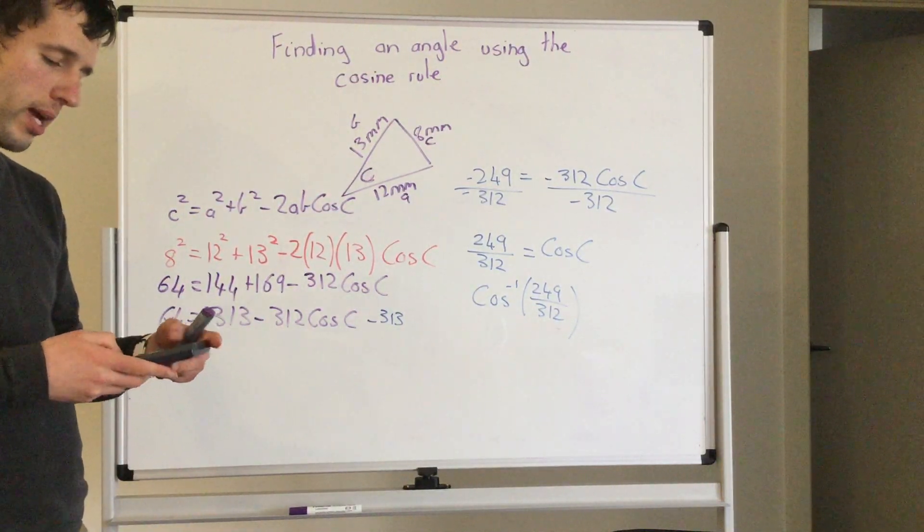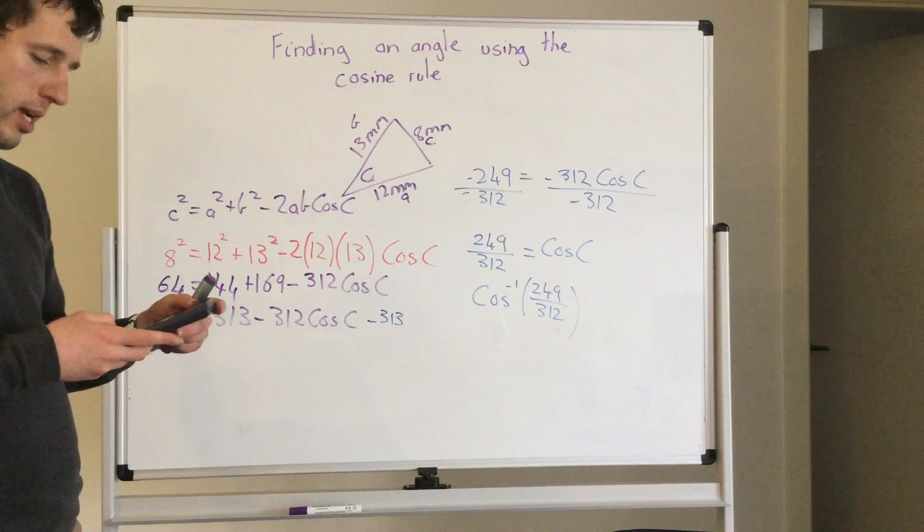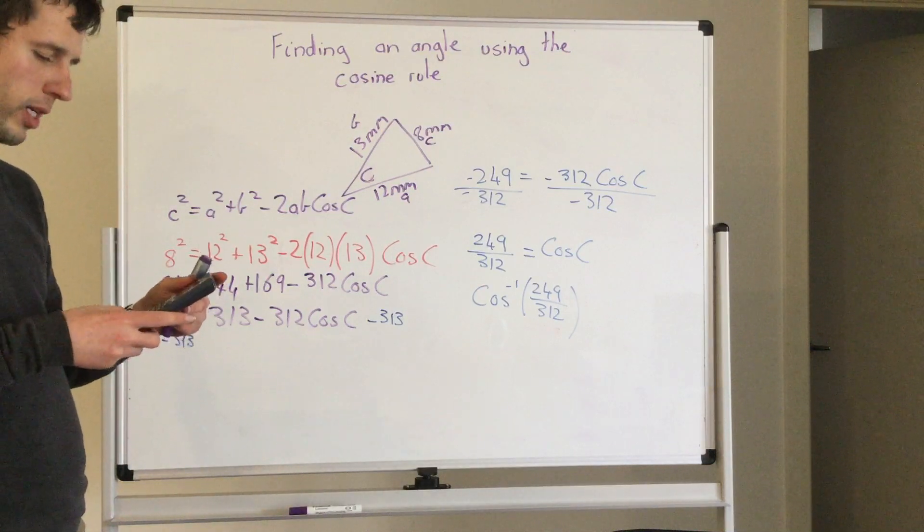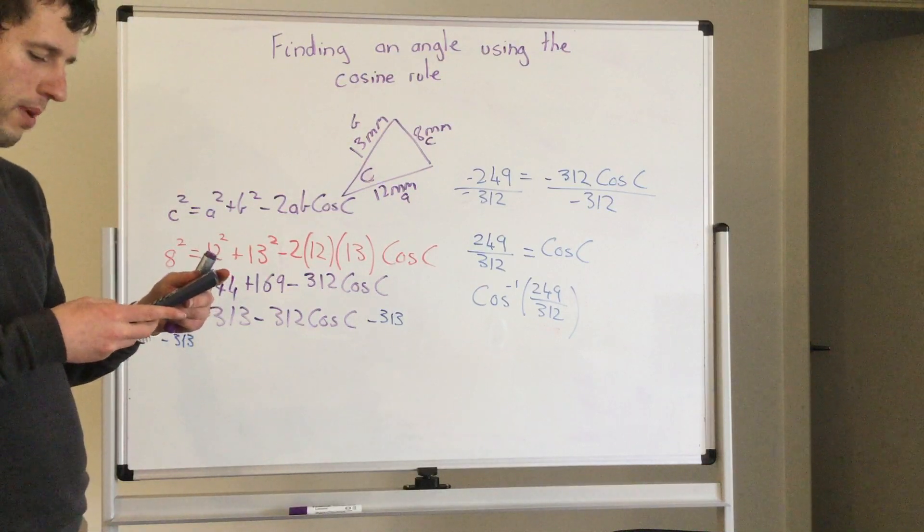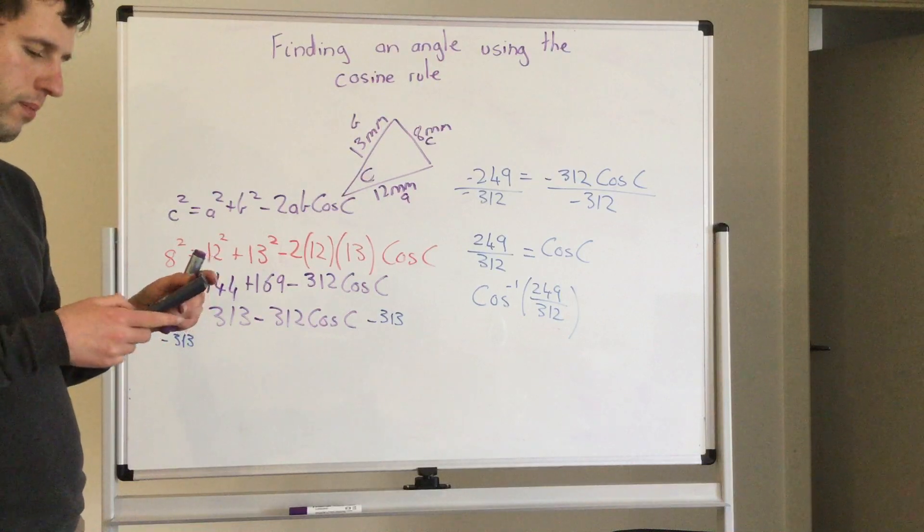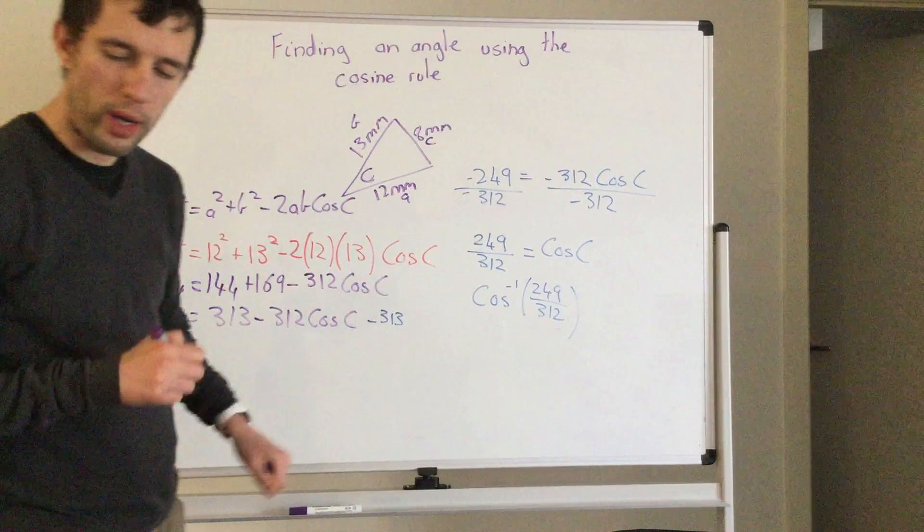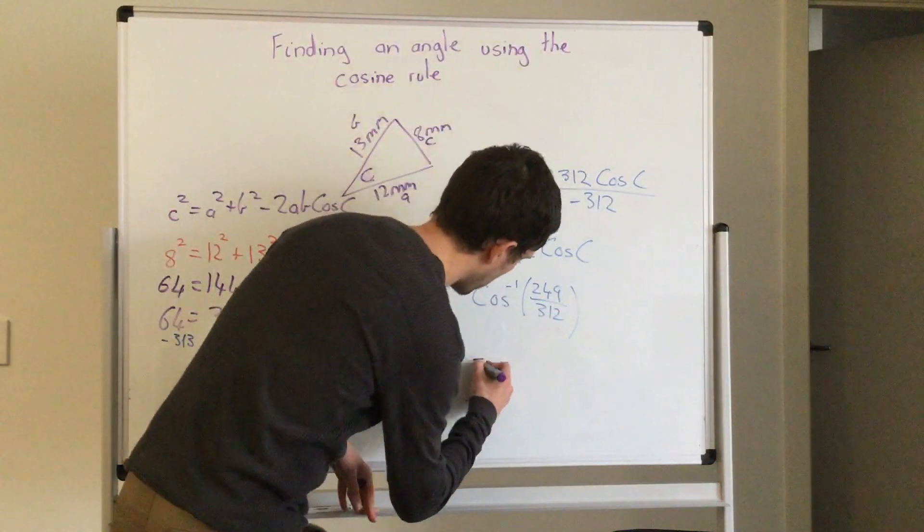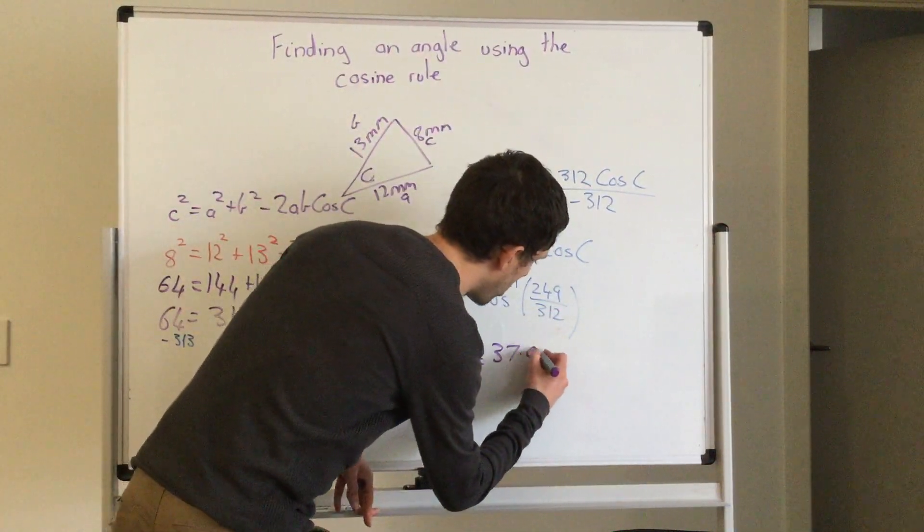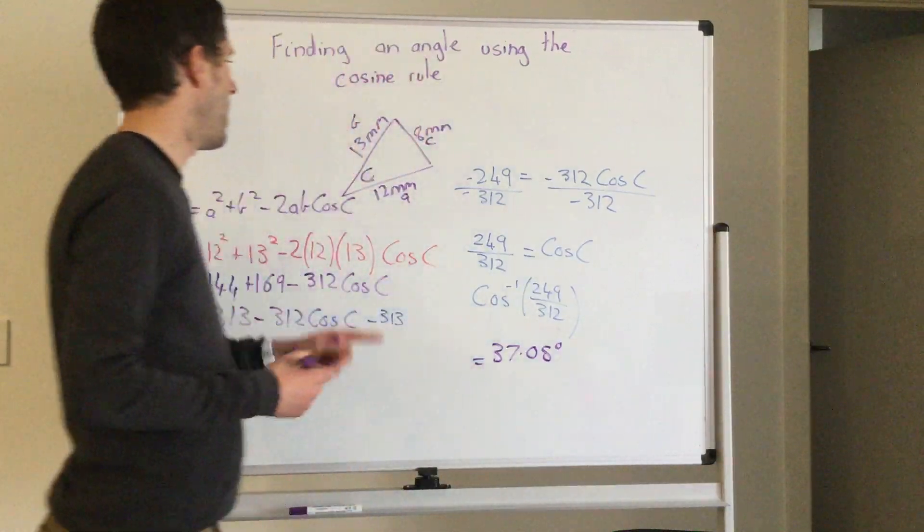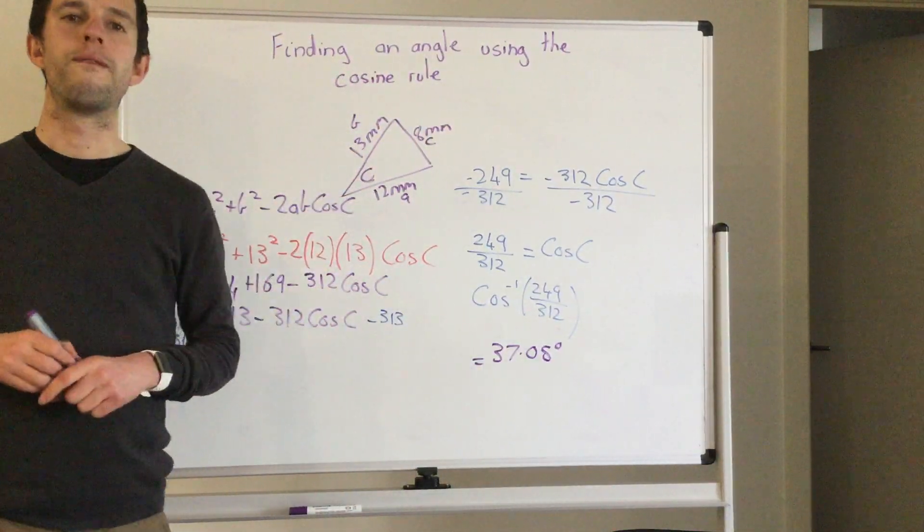So using a calculator, cos negative 1, 249 divided by 312, and it equals 37.05, 37.05 degrees. And that is my angle for c.